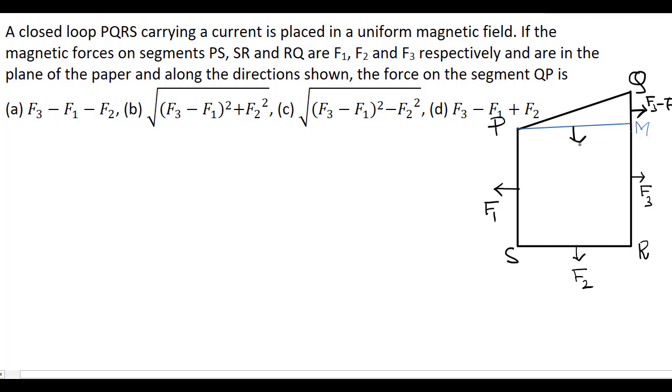So the force acting on PM is also F2 in this direction. Now the force acting on PQ is equal to the square root of (F3 minus F1) squared plus F2 squared.